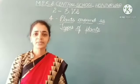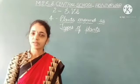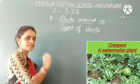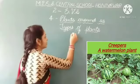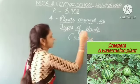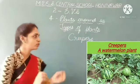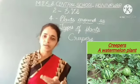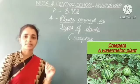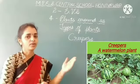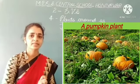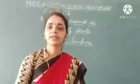Do you like watermelon? What type of plant is it? That is a creeper. Some plants grow along the ground — they are called creepers. For example, watermelon plants, pumpkin plants, cucumber plants and grass.